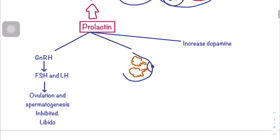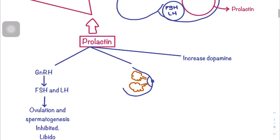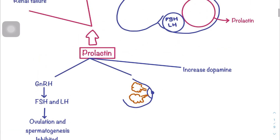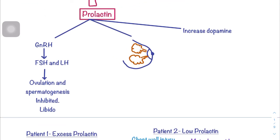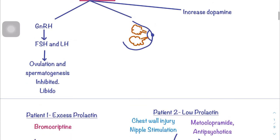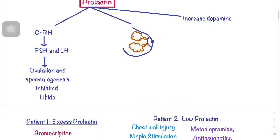Prolactin inhibits GnRH (gonadotrophin releasing hormone) in the hypothalamus, indirectly inhibiting the release of FSH and LH. This causes inhibition of ovulation and spermatogenesis, resulting in absence of the menstrual cycle — called amenorrhea. This is important in pregnancy: when prolactin levels are high, it ensures the mother does not become pregnant again while breastfeeding or still pregnant.